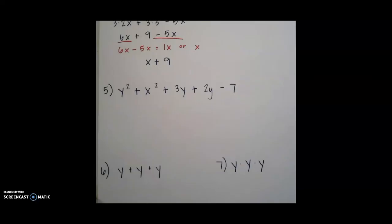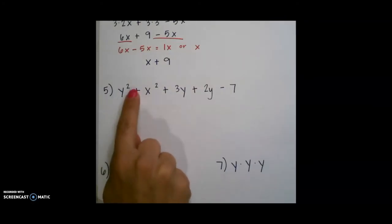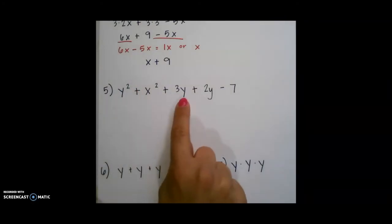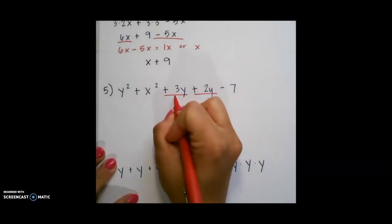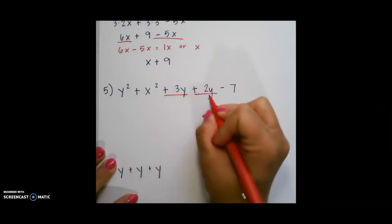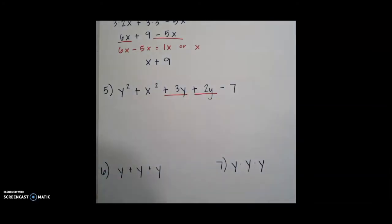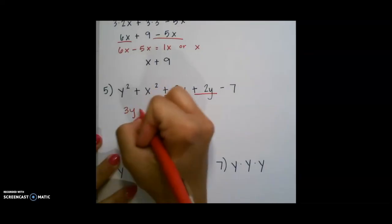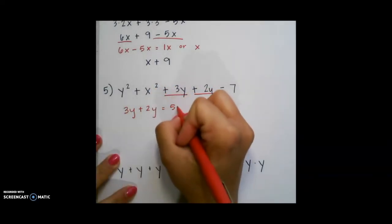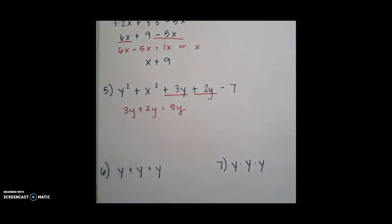On our next example, you will notice that we have a couple of terms that have exponents. You will notice that there is no other term that is y to the second power. We see y, but these two cannot be combined because they do not have the same exponent. This means that the only like terms we have are plus 3y and plus 2y. So we take these and add them together, and that will give me 5y.